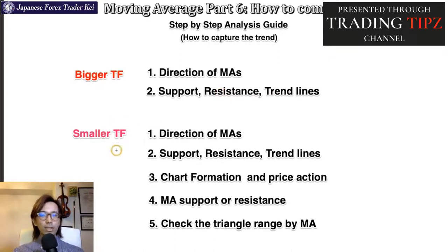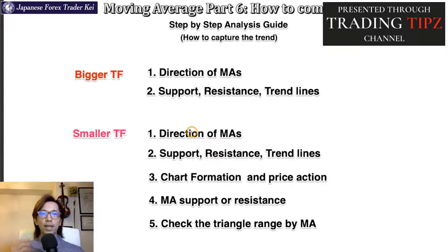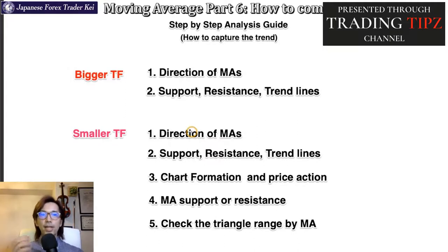Then you go down to the lower timeframe chart and check the direction of the moving averages again and see if they are all pointing towards the same direction. If they are not — like if the short-term MA is pointing up while the mid-term and long-term MAs are pointing downward — that's basically a range market. So in the lower timeframe, wait for confirmation of all moving averages from short-term, mid-term to long-term pointing the same direction. Also try to see if the current price level on the lower timeframe chart is somewhere close to the bigger timeframe's resistance, support, or any other lines. Also look at the price action on the lower timeframe chart and see if price has been resisted or supported by any of the moving averages in that lower timeframe.